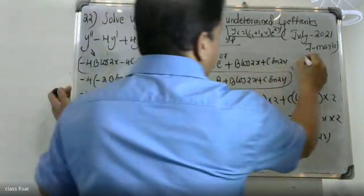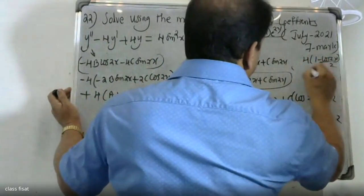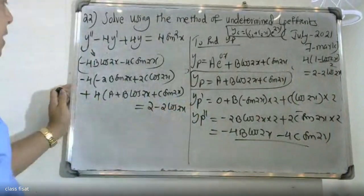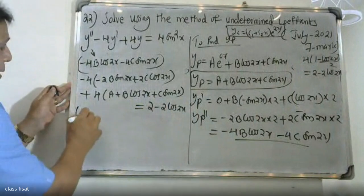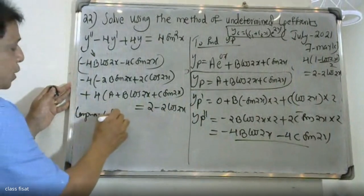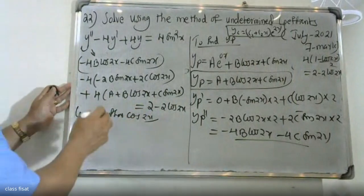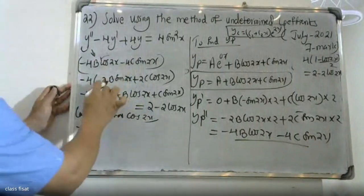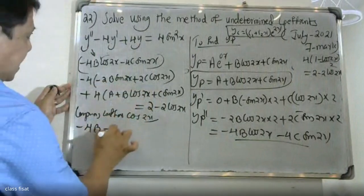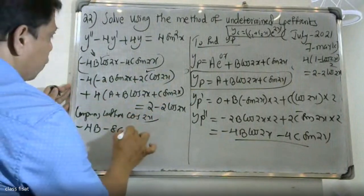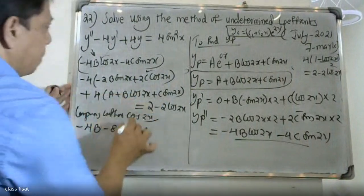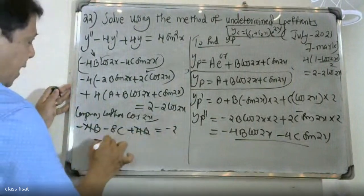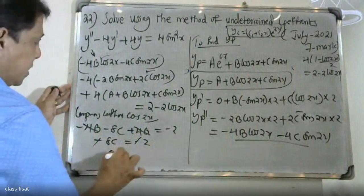After substitution, we simplify and equate to the right-hand side 2 - 2cos2x. We now compare coefficients of cos2x, sin2x, and the constant term on both sides.